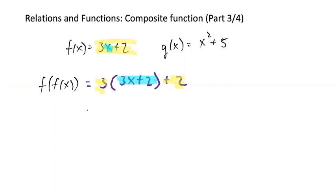So once we have this set up, we can just distribute it. 9x plus 6 plus 2, and that would be 9x plus 8.